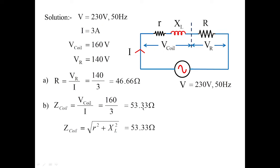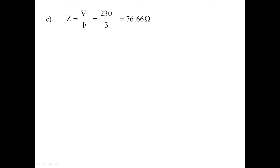The impedance value of 53.33 ohms is substituted in magnitude form. Squaring both sides and reframing as equation 1: 53.33 squared gives 2844.09. Now let us calculate the impedance of the entire circuit — total supply voltage divided by series current — which gives the total impedance of the network as 76.66 ohms.